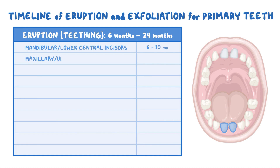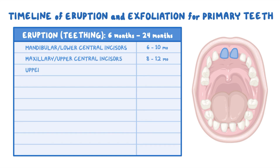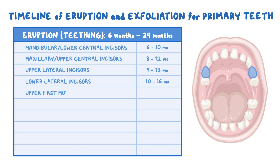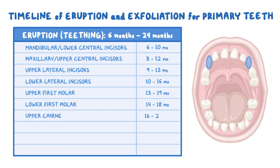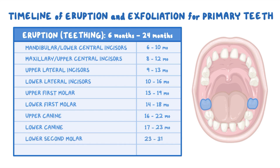Next come the maxillary upper central incisors at around 8 to 12 months, and then the upper lateral incisors at around 9 to 13 months. The lower lateral incisors erupt at around 10 to 16 months, the upper first molar at 13 to 19 months, lower first molar at 14 to 18 months, upper canine at 16 to 22 months, lower canines at 17 to 23 months, lower second molar at 23 to 31 months, and finally the upper second molar at 25 to 33 months.